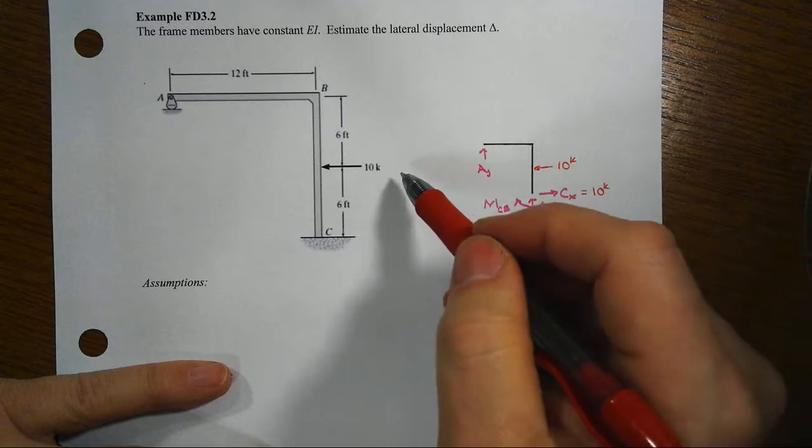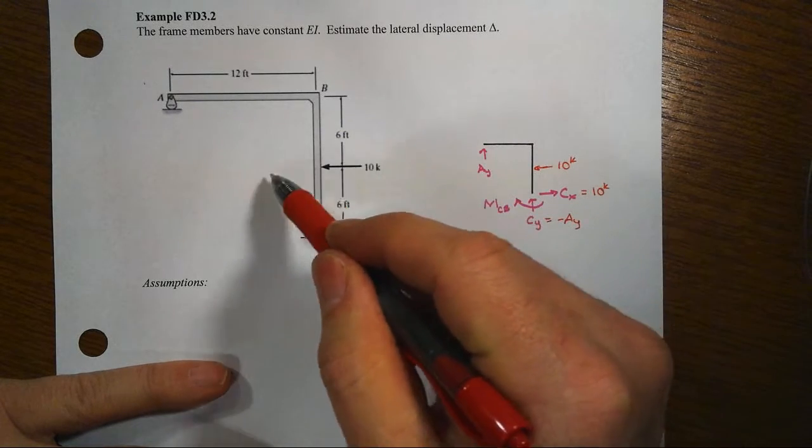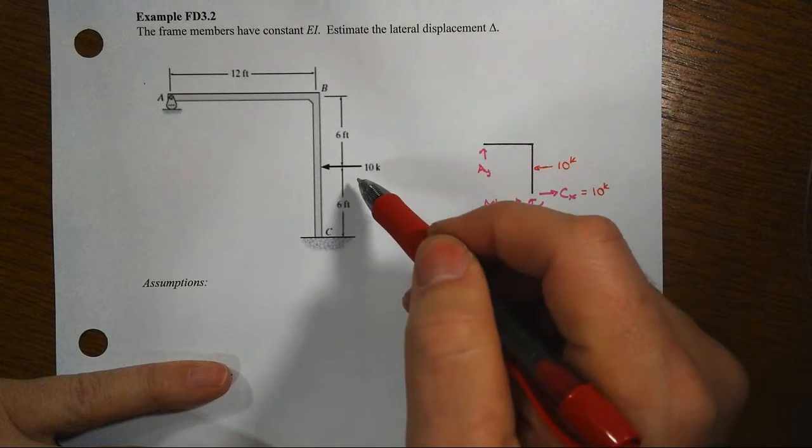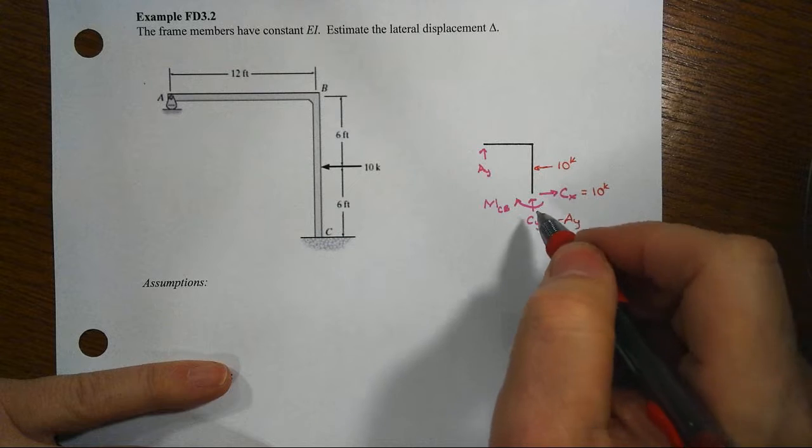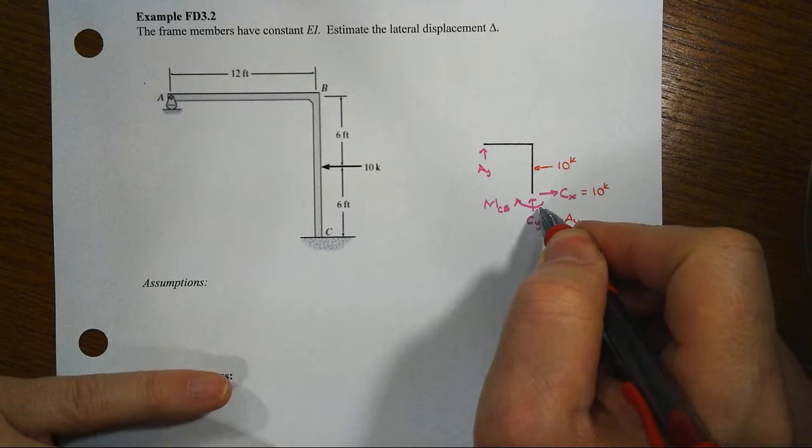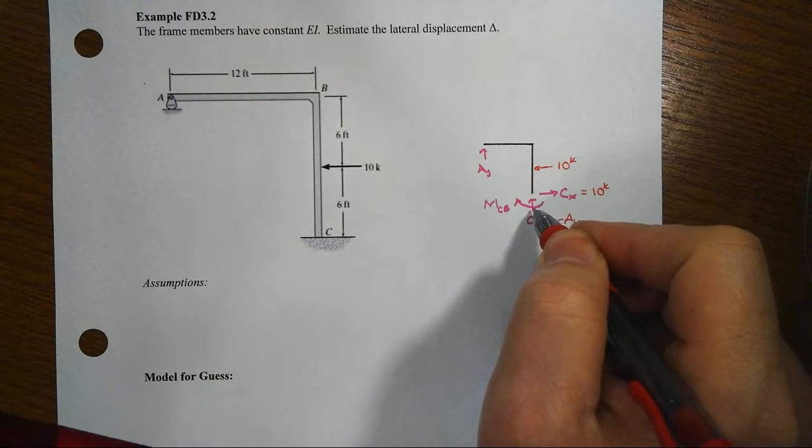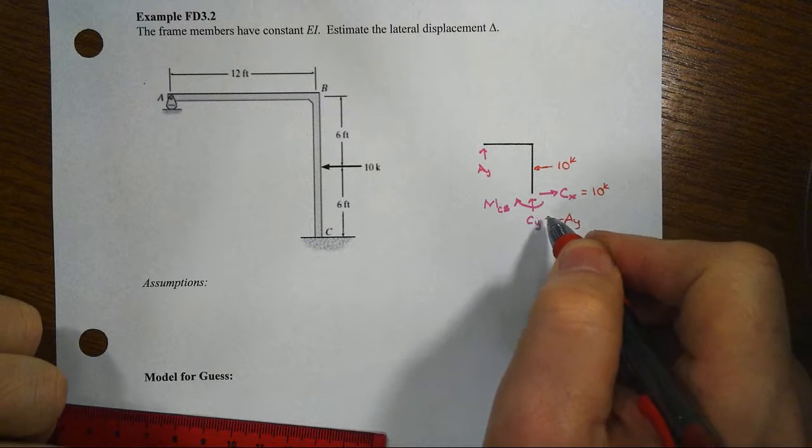And with this 10 kip load wanting to try to not only slide the structure to the left, it also wants to try to create a counterclockwise rotation of the structure about point C. That would make sense to have a resisting moment down at the base of MCB.